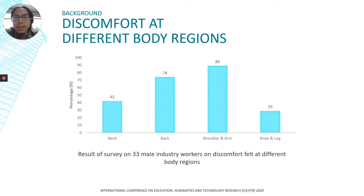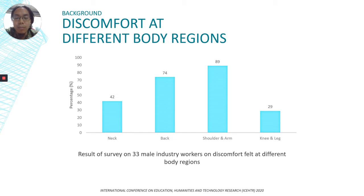Next, we are going to look at the survey of 33 male industrial workers and the discomfort they felt at different body regions. The highest among them were 89% experiencing discomfort at shoulder and arm, followed by discomfort at the back at 74%, discomfort at the neck at 42%, and discomfort at knees and legs at only 29%.